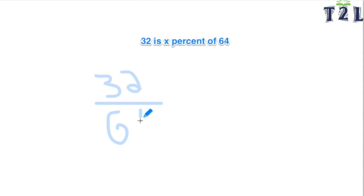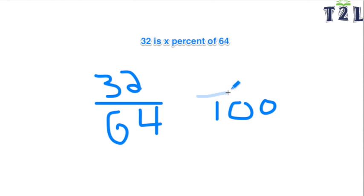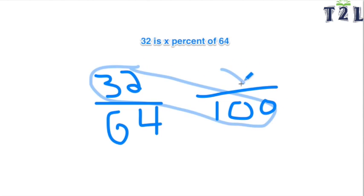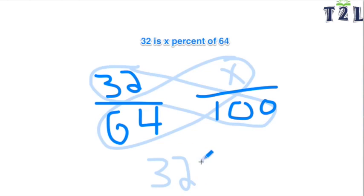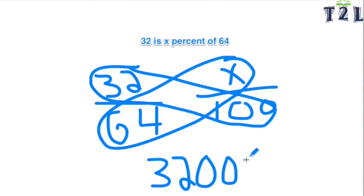The first method is setting up a proportion. You're going to write 32 over 64 is equivalent to x over 100, and when you cross multiply you're going to get 3200 is equal to 64x.